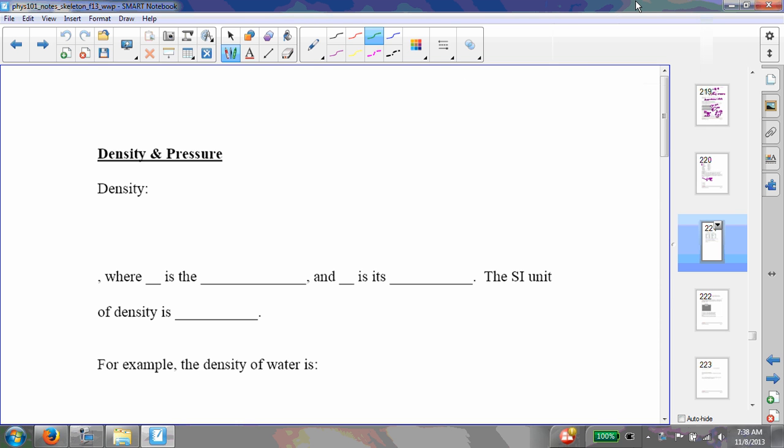All right, so let's move on to density and pressure. You've probably seen density before. Density is just mass per unit volume, M over V, where M is the mass of the object or the material and V is the volume. The SI unit for this is kilograms per cubic meter.